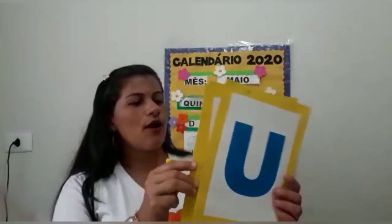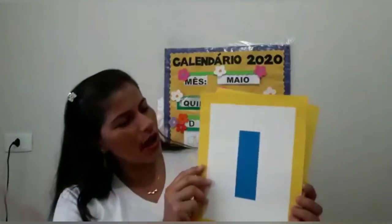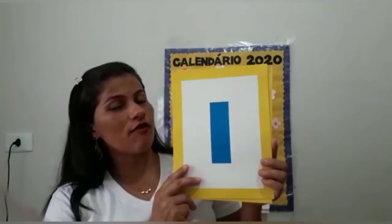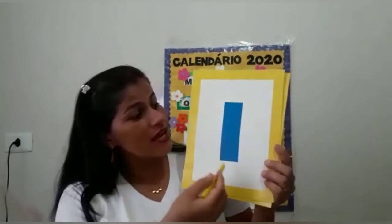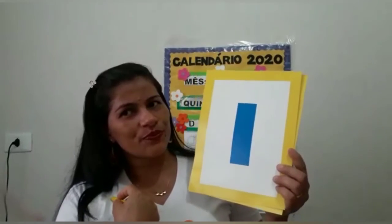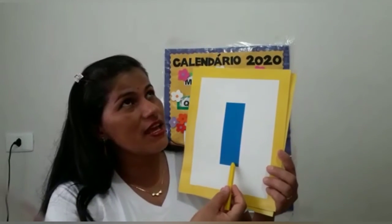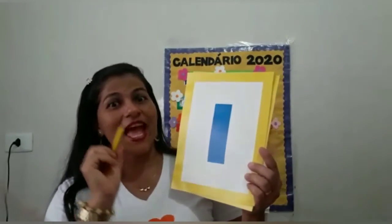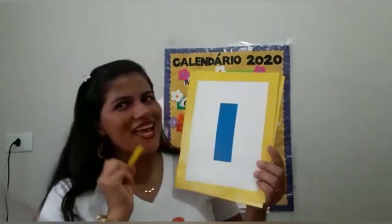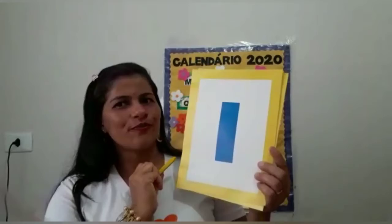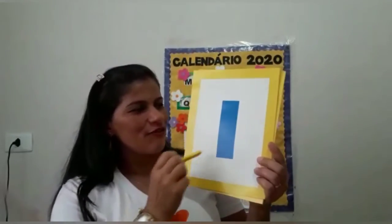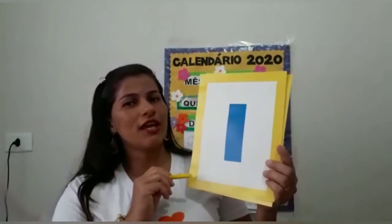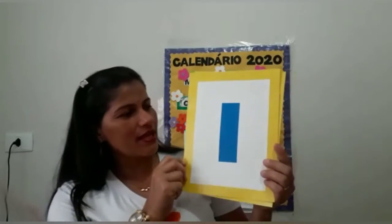E a vogal I? Quais são as palavrinhas que começam com a vogal I? Índio, ilha, imã, igreja, Ivo, Ivanete. Viu? Nome de pessoas, nome de coisas também.